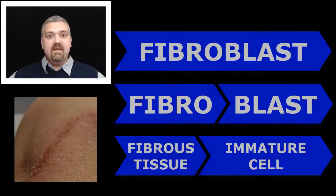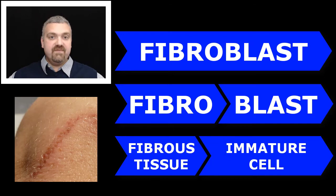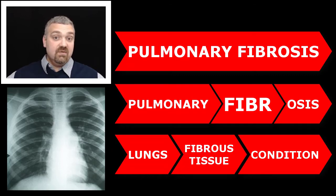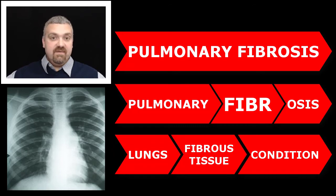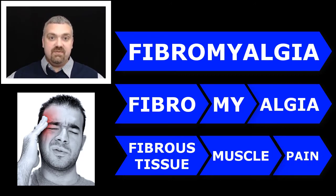Next we have fibro, which means fibrous. Think fibroblast — a blast is an embryonic or immature cell, so a fibroblast is an immature cell that produces fibrous tissue; fibroblasts are the cells that make scar tissue. Another example is pulmonary fibrosis, a condition where fibrous tissue invades the lungs and healthy lung tissue is replaced by scar tissue. Lastly, fibromyalgia — fibro means fibrous tissue, mya means muscle, algia means pain — so fibromyalgia is pain in the muscles and fibrous connective tissues.